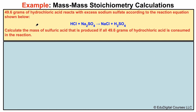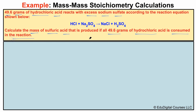In this example problem, 49.6 grams of hydrochloric acid reacts with excess sodium sulfate according to the reaction equation shown below. Calculate the mass of sulfuric acid that is produced if all 49.6 grams of hydrochloric acid is consumed in the chemical reaction. We have hydrochloric acid reacting with sodium sulfate, producing sodium chloride and sulfuric acid, and we want to figure out the mass in grams of sulfuric acid that will be produced.